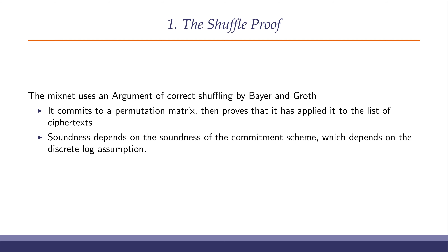The MixNet used an argument of correct shuffling by Bayer and Groth. The rough idea is it commits to a permutation matrix, proves that it really is a permutation — that is, that it doesn't add, drop, or copy any of the votes — and then proves that it has applied that permutation to the list of ciphertexts it received in order to produce the list of ciphertexts it outputs. Soundness depends on the soundness of the commitment scheme used to commit to the permutation matrix, which in this case depends on the discrete log assumption.